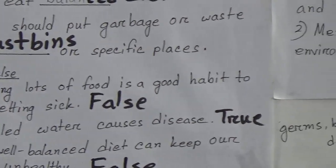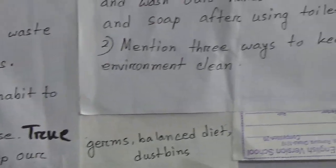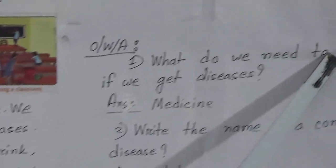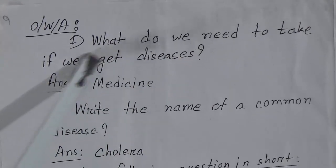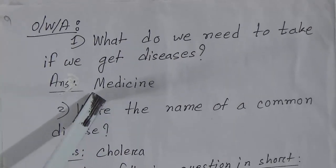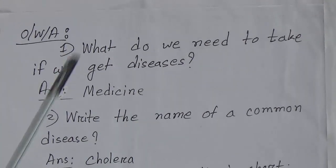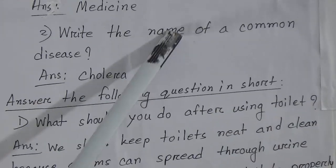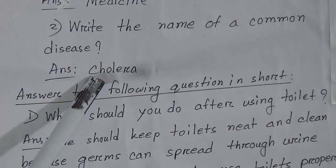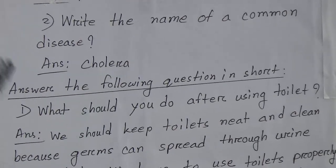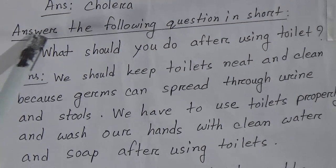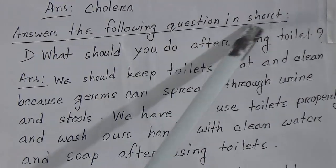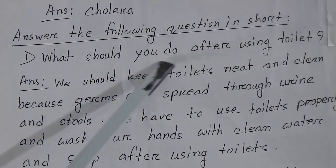Now one word answer questions. Number one: what do we need to take if we get a disease? The answer is medicine. Number two: write the name of a common disease — the answer is cholera.